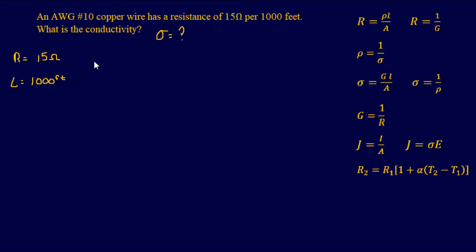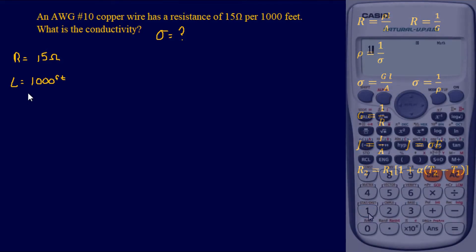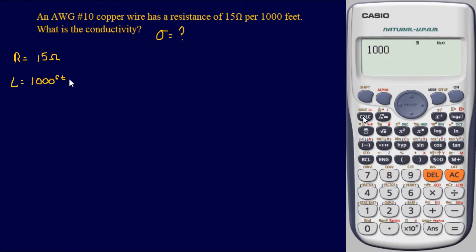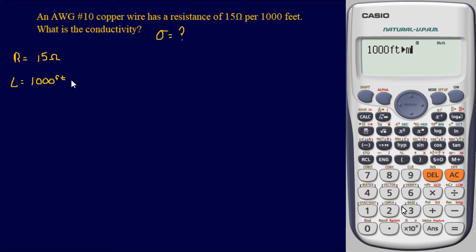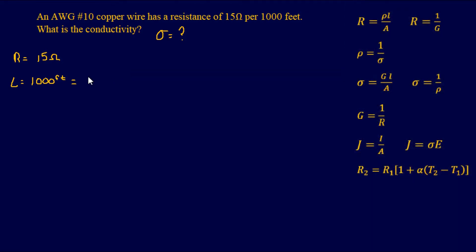A lot of our equations are in the metric system, so we're going to have to convert 1,000 feet to meters. Using our Casio — there's a conversion number 3 on there that will convert feet straight into meters — that gives us 304.8 meters, saving us a little time.